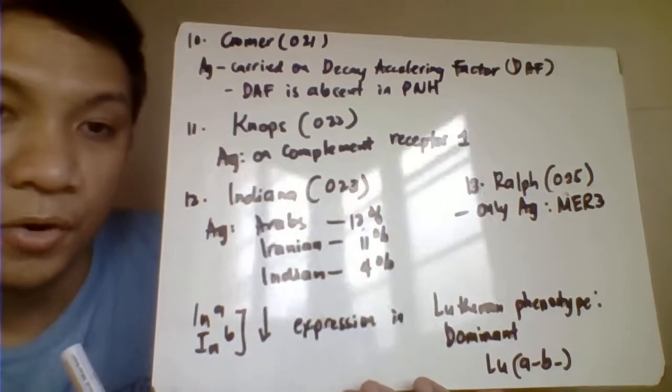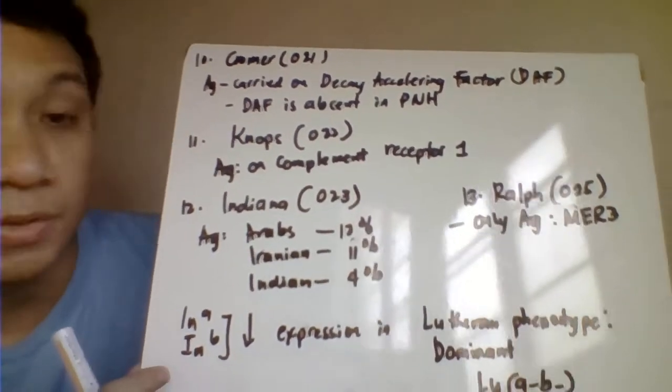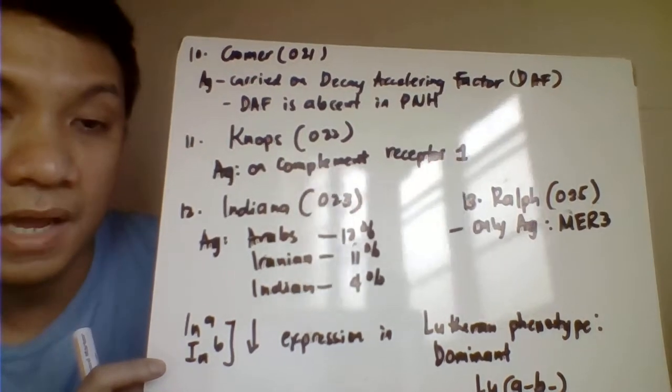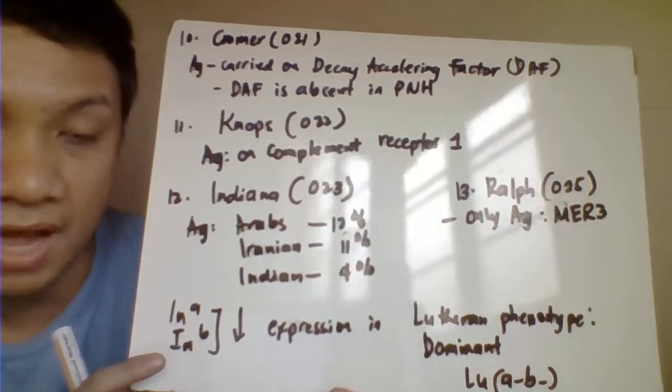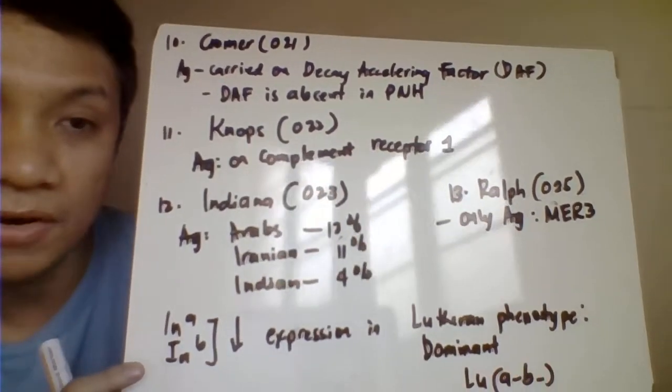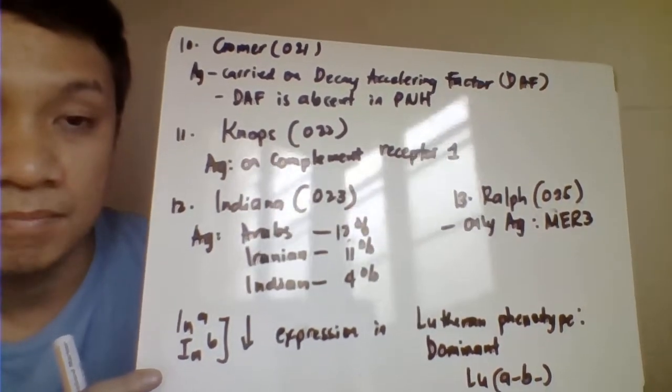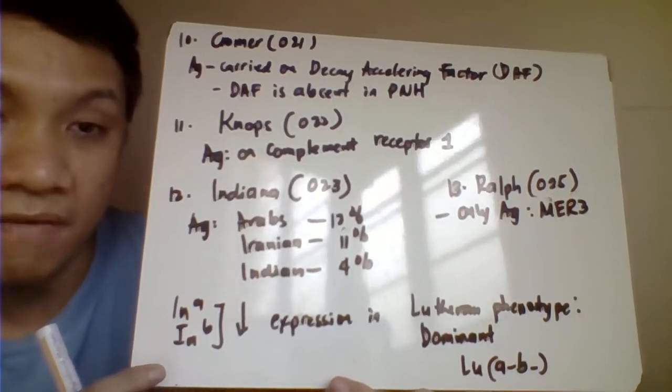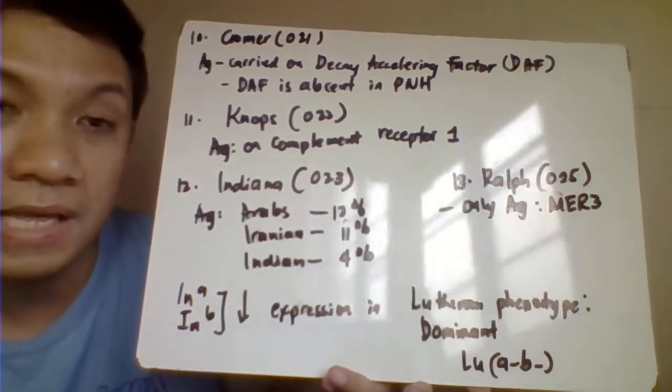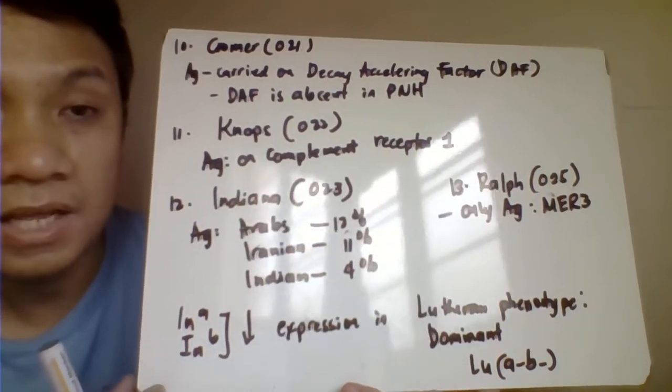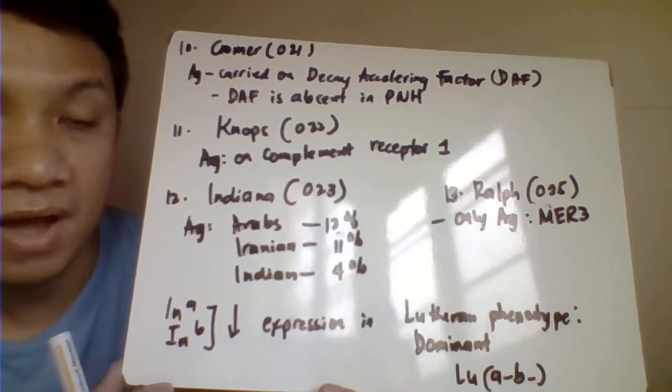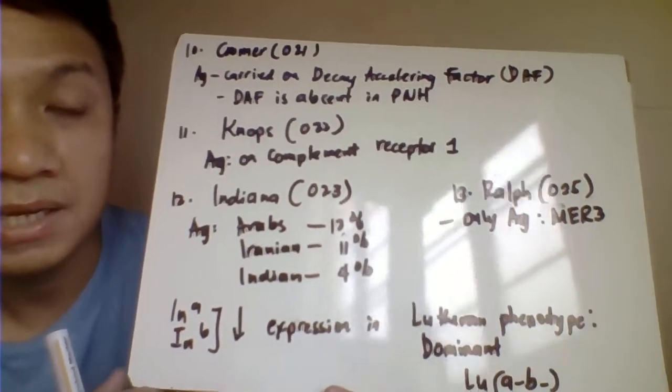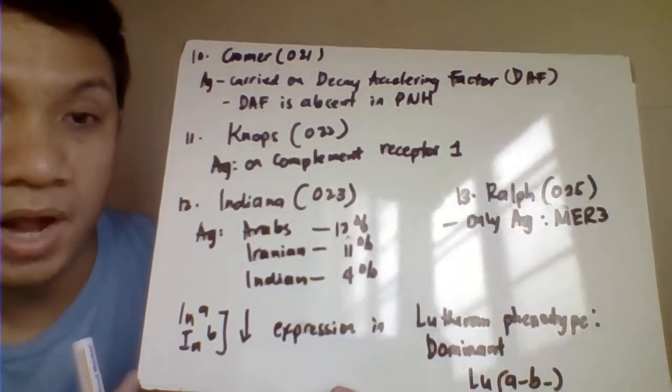Then we have the Cromer blood group system, 021 ISBT classification number. The Cromer blood group system is carried on the decay accelerating factor. In the case of your paroxysmal nocturnal hemoglobinuria, this is characterized by the absence of the decay accelerating factor. Therefore, it's given that since PNH has no decay accelerating factor, expect also that patients with PNH would have a decreased expression of your Cromer antigen or negative for the Cromer antigen.